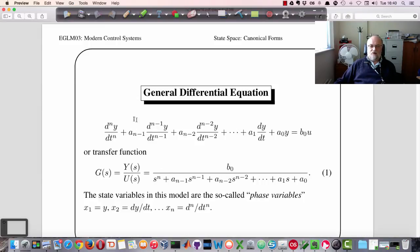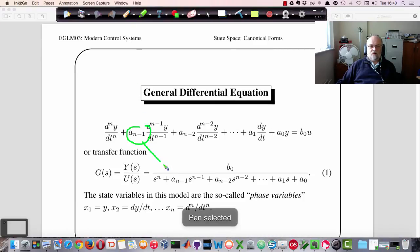And these coefficients here match the coefficients in the transfer function. There's a one-to-one mapping between these two. And b_0 here is there.